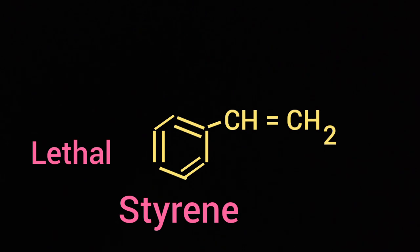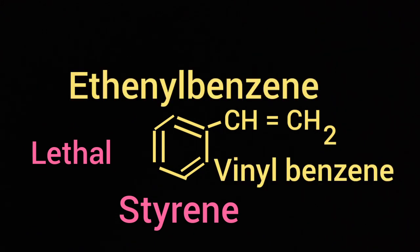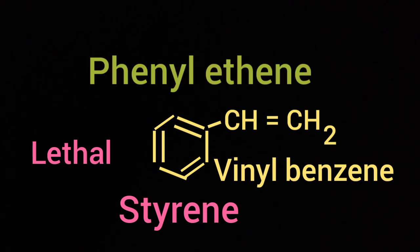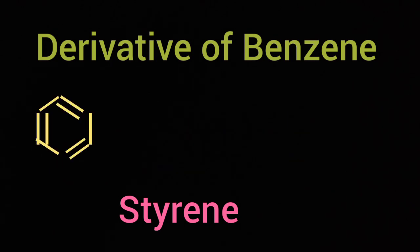Styrene gas is an organic compound. It is otherwise known as ethenyl benzene or vinyl benzene or phenyl ethane. It is a derivative of benzene.